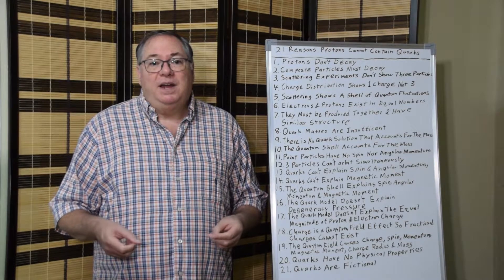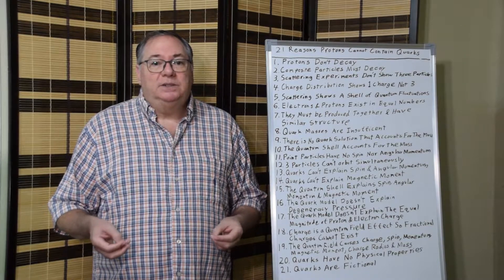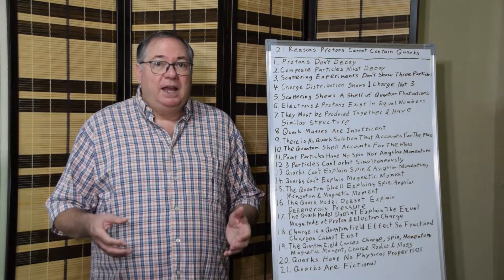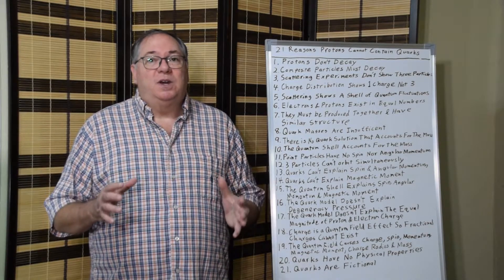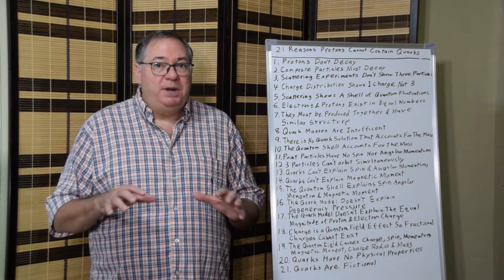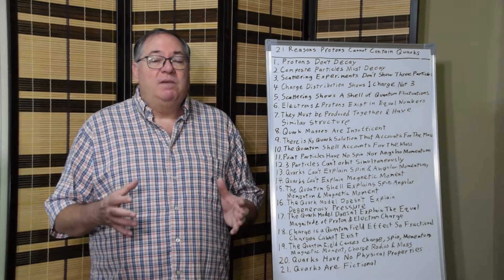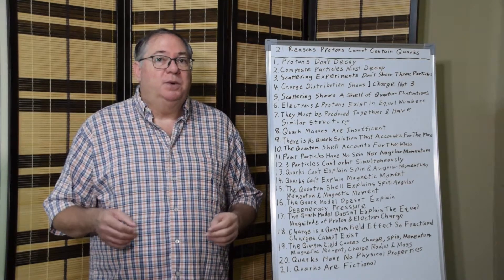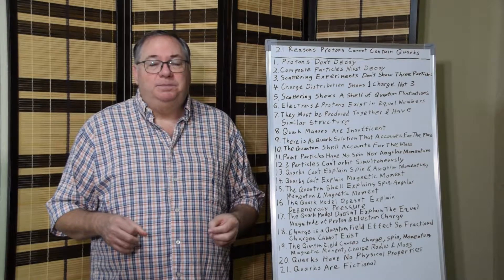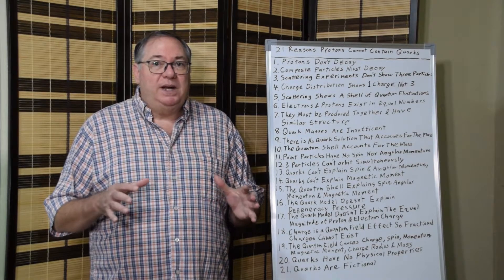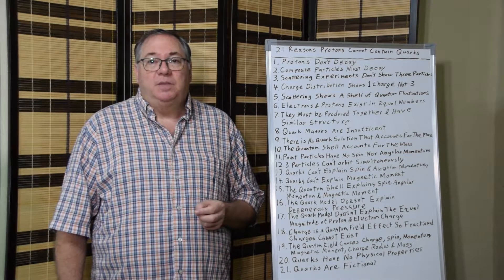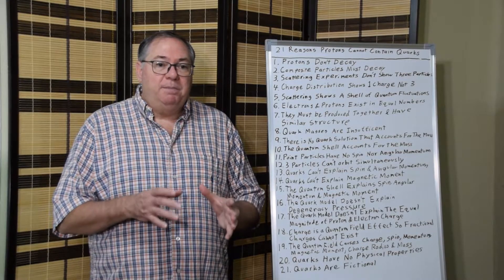And then number five, scattering experiments show a shell of quantum fluctuations. As I mentioned previously, when we scatter light or particles off of proton, we come up experimentally with a charge radius. So there appears to be a spherical shell of quantum fluctuations that interact with whatever particle or photon we're using to scatter off of. And these quantum fluctuations at the spherical shell is what gives the proton its structure around what appears to be a bare proton in the center.